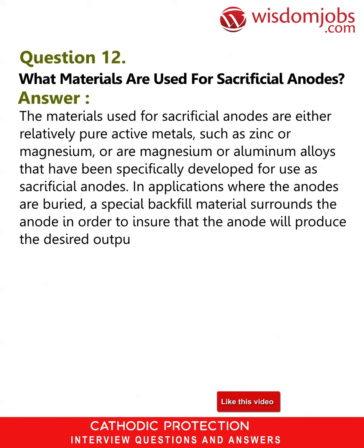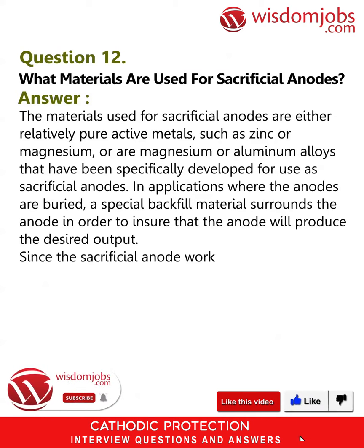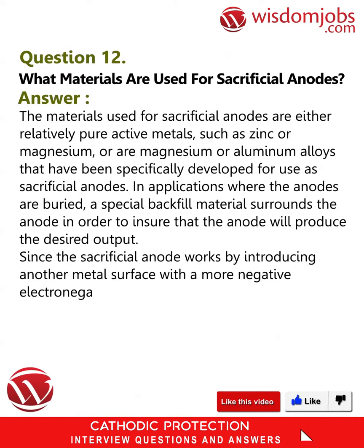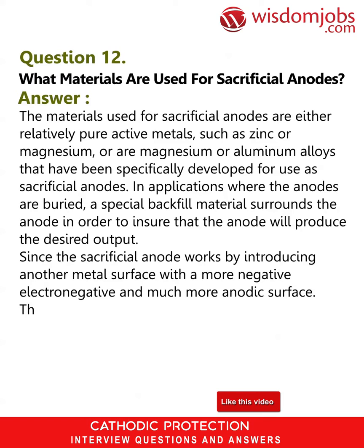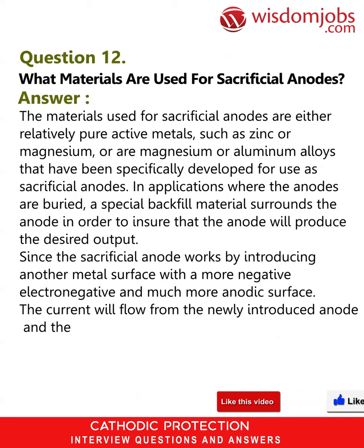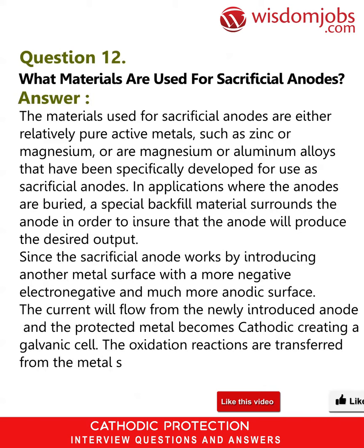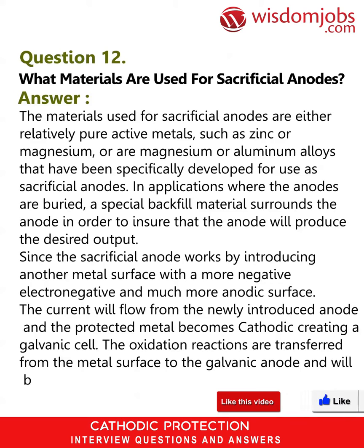Since the sacrificial anode works by introducing another metal surface with a more negative electronegative and much more anodic surface, the current will flow from the newly introduced anode and the protected metal becomes cathodic, creating a galvanic cell. The oxidation reactions are transferred from the metal surface to the galvanic anode, which will be sacrificed in favor of the protected metal structure.